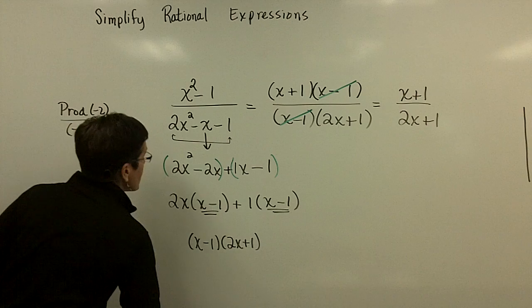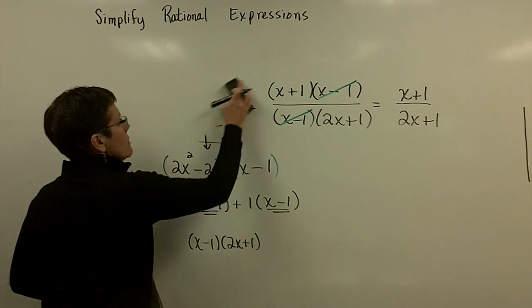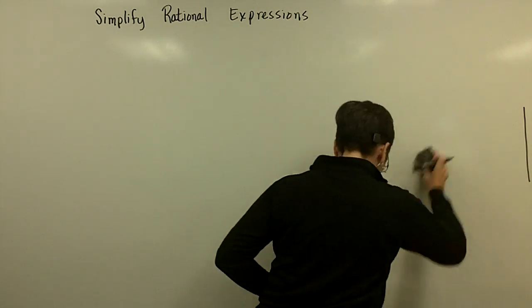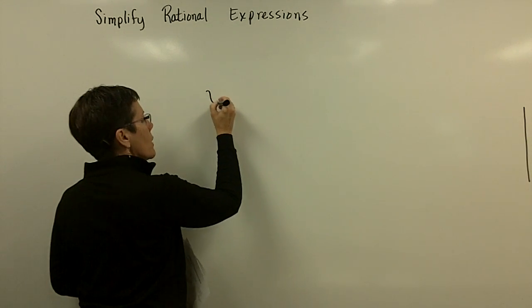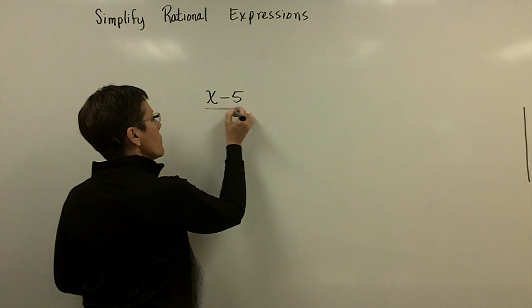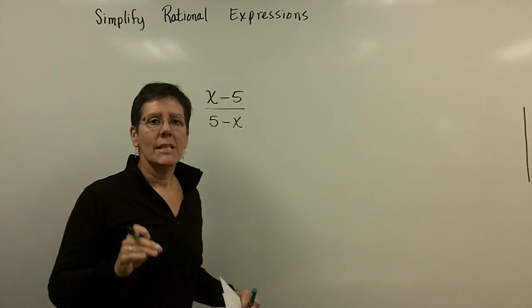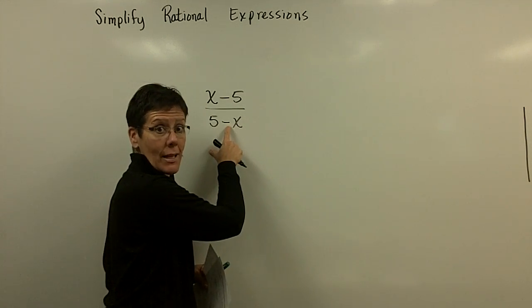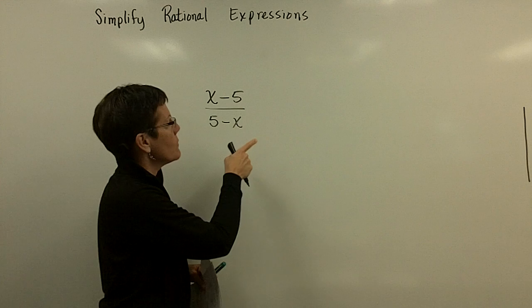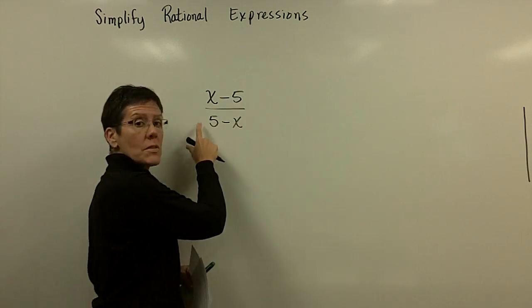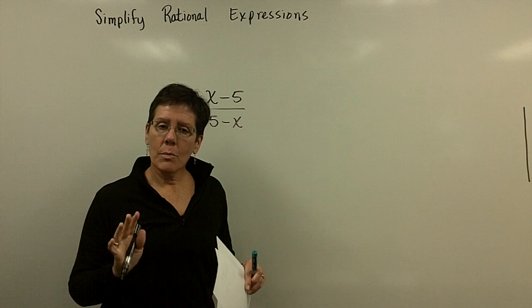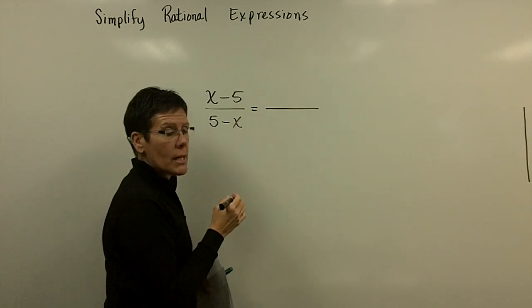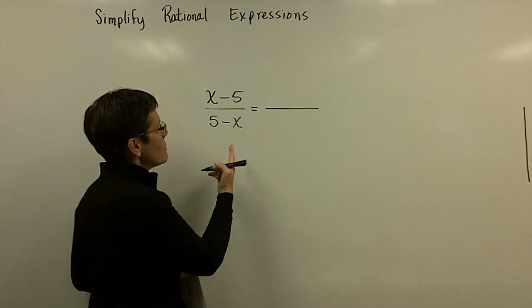Let's go ahead and talk about opposites. So the problem I'd like to do is just real simple. It's a binomial over its opposite. Exactly its opposite. This x is positive. That x has a minus sign in front of it or plus a negative 1 in front of it. That's a minus 5. This is a positive 5.